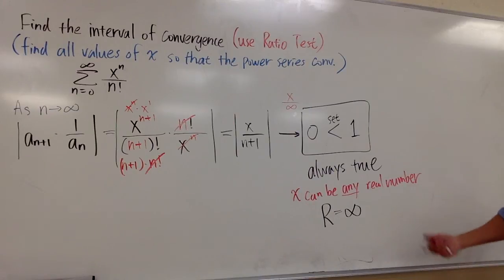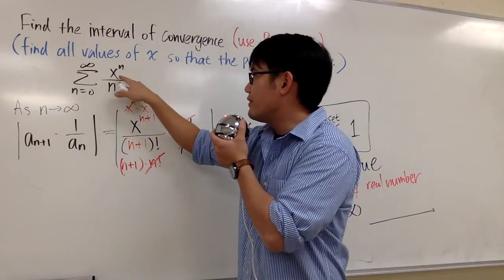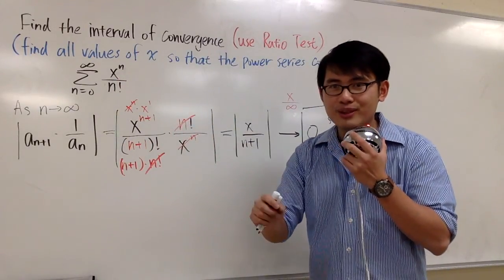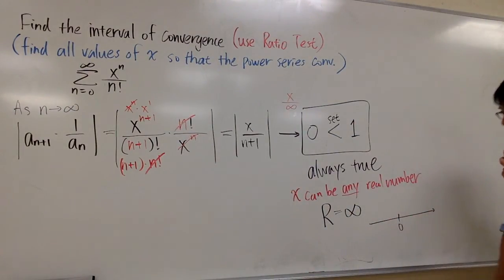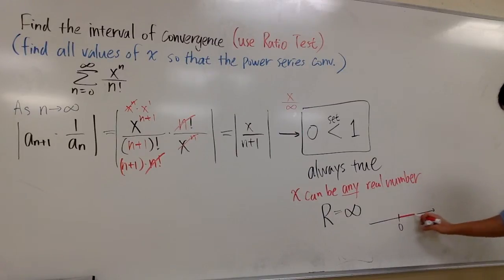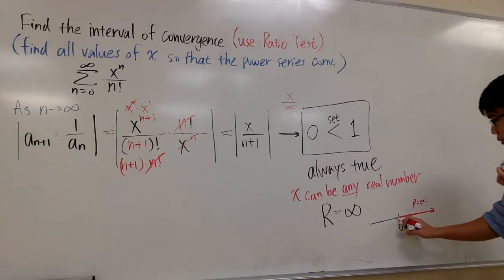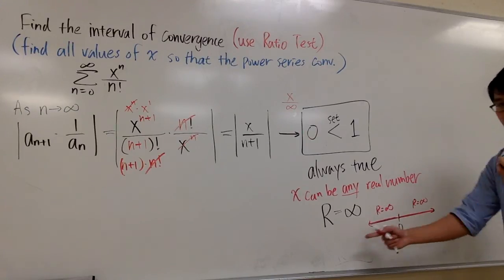And then with a picture I can show you, let's refer back to the original power series. Here we have x to the n power, so that's like x minus 0 to the n power. So the center is at 0. And then, well, R is infinity means that I can go all the way to the right, R is equal to infinity, and I can go to the left all the way. There's no end. R is equal to infinity. I can go either way, right?